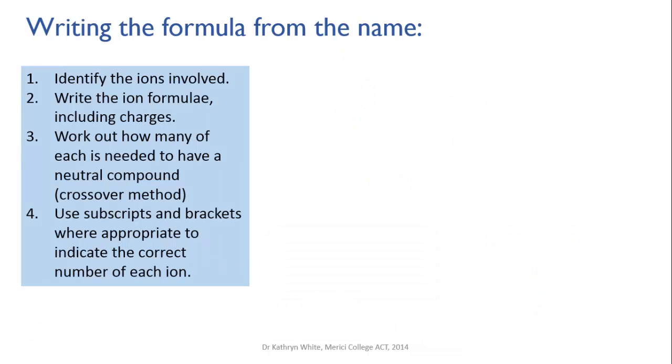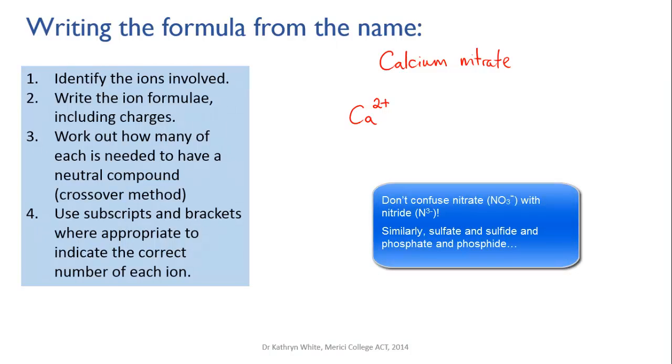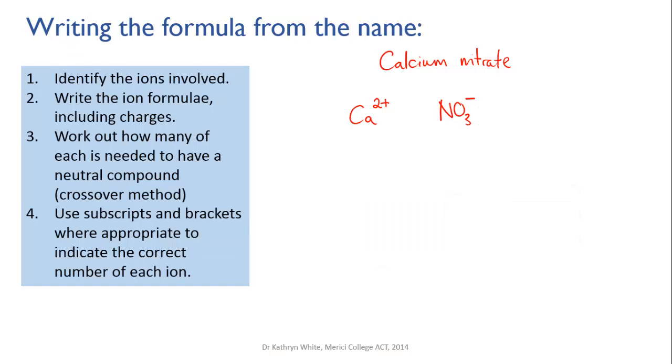Keep in mind that what you're trying to do is balance up the charges so that the total negative is equal to the total positive. Let's try another example. Let's try and write the formula for calcium nitrate. First we work out the ion formulae. Calcium is the element calcium. It's in group two so it's going to have a charge of two plus. Nitrate, now don't get this confused with nitride which is the nitrogen monatomic ion. Nitrate with the ate indicates that it's one of your polyatomic ions. You should remember that its formula is NO3 with a charge of one minus.